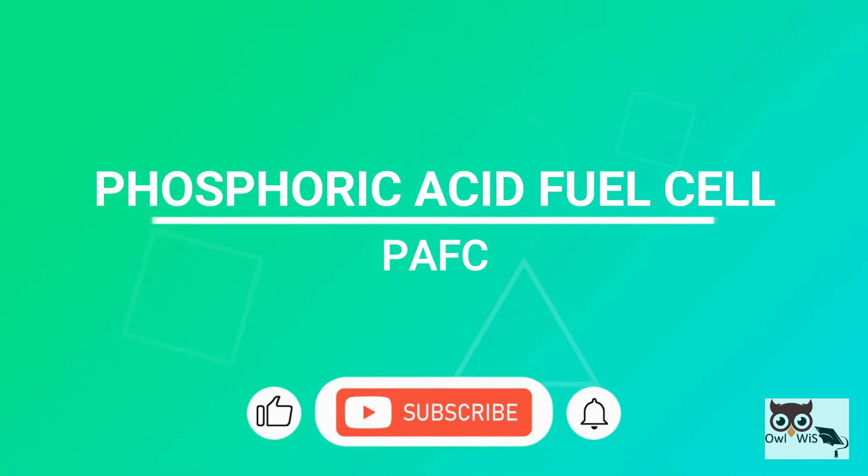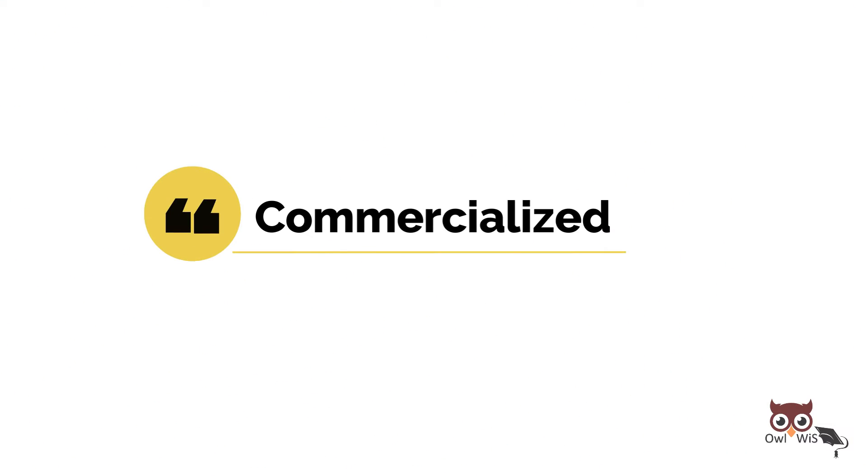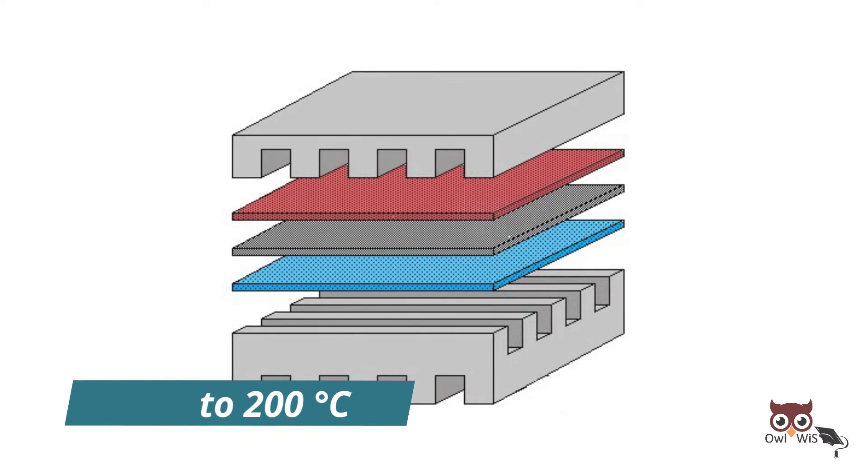Phosphoric Acid Fuel Cells are a type of fuel cell that uses liquid phosphoric acid as an electrolyte. They were the first fuel cells to be commercialized. Operating range is about 150 to 200 degrees Celsius.